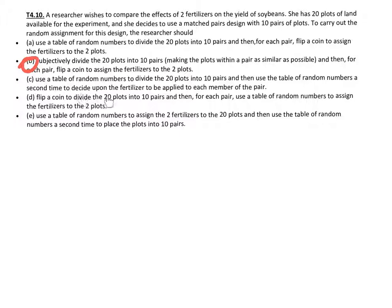Letter D. Flip a coin to divide the 20 plots. Again, this is not randomly done. Letter E. Use a table of random numbers to assign two fertilizers to the 20 plots. Then use a table of random numbers a second time to place the plots into 10 pairs. So the issue here is they're still trying to use randomness to put the pairs together. The only one that makes logical sense here is B, which is truly correct.